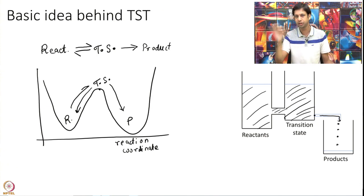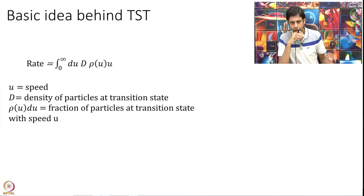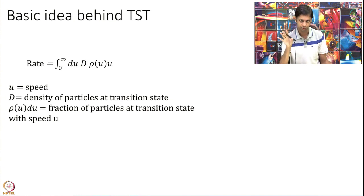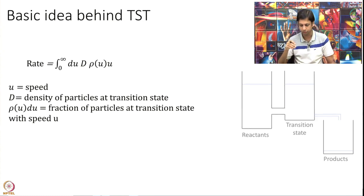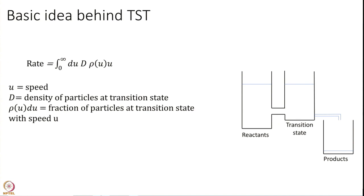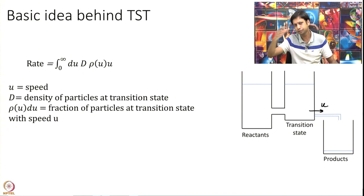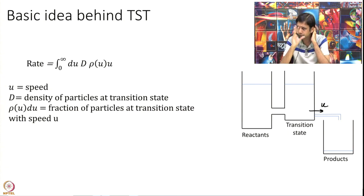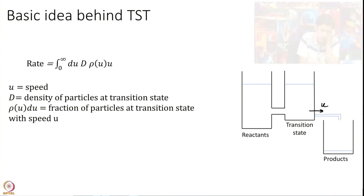We assume the flow from transition state to products is very slow. The rate at the transition state is the speed at which we cross the transition state multiplied by the density of the transition state. The density of the transition state is the total density of particles at the transition state multiplied by the fraction of particles having speed u. You can refer back to the last module for that rate expression.